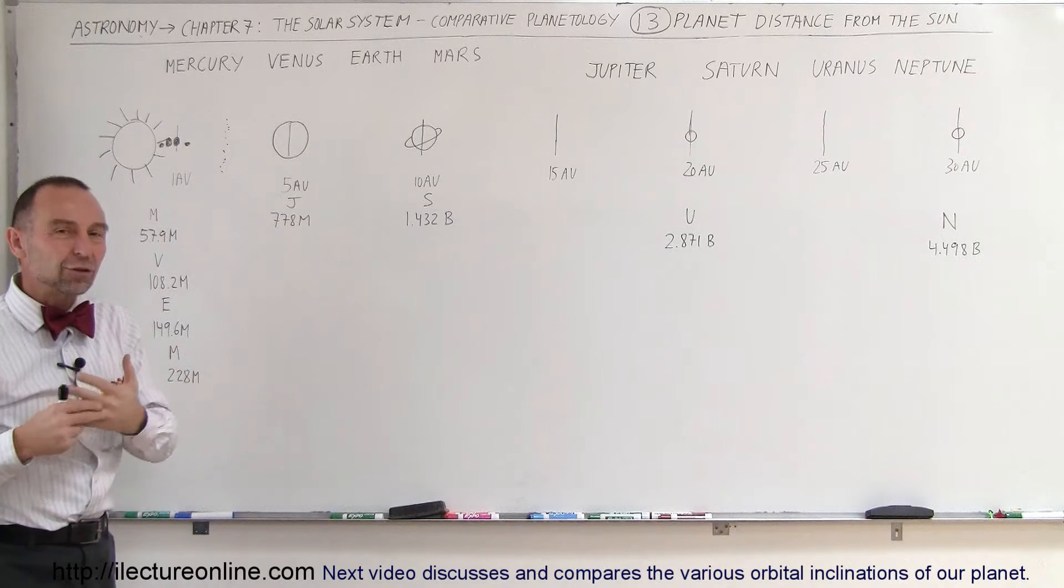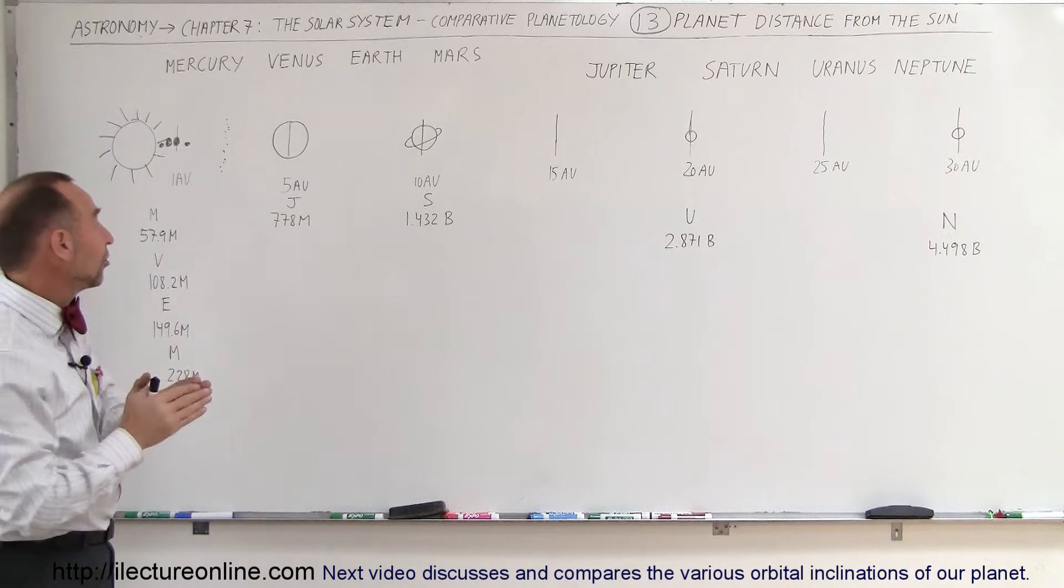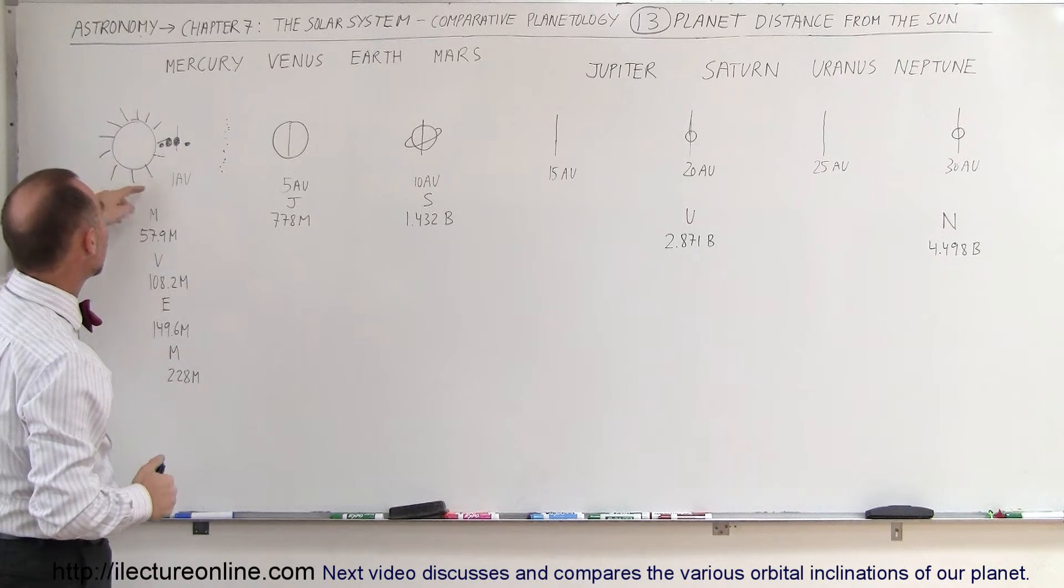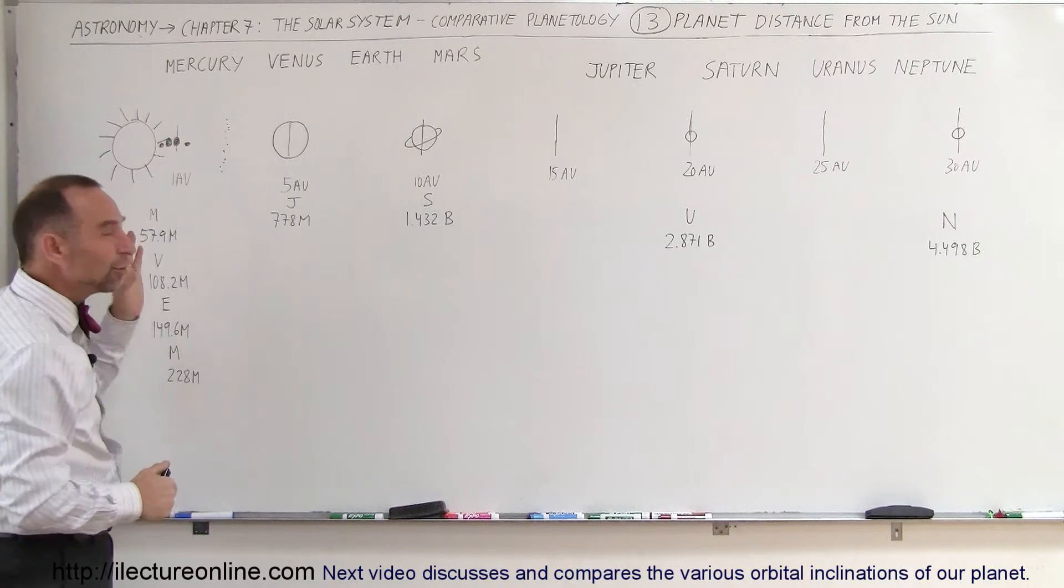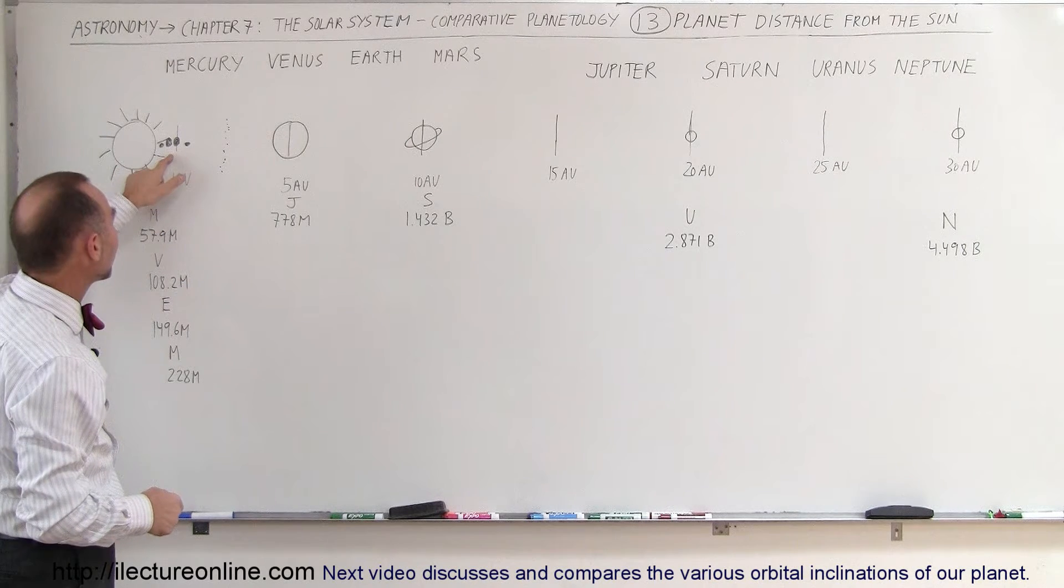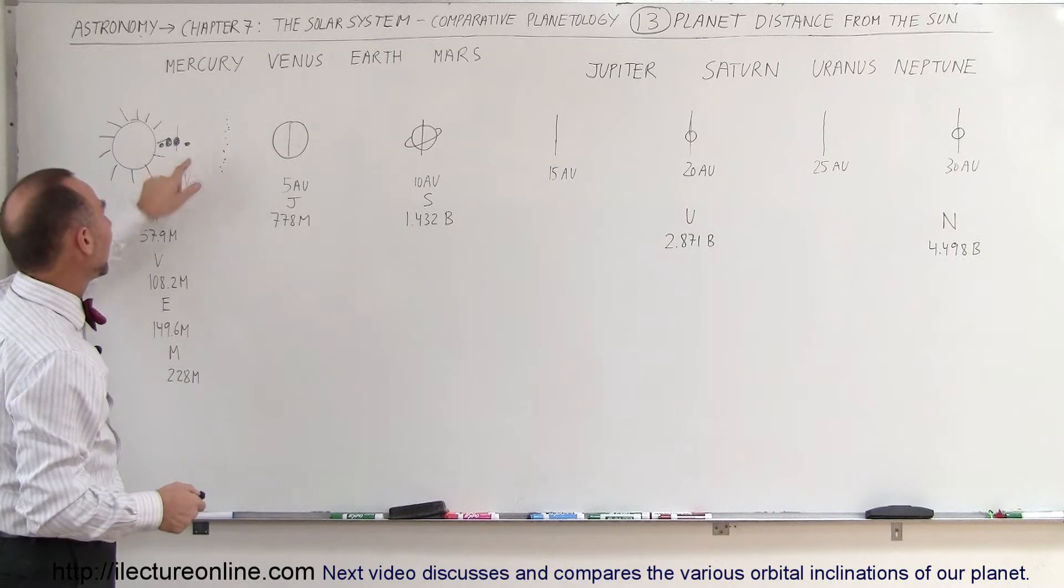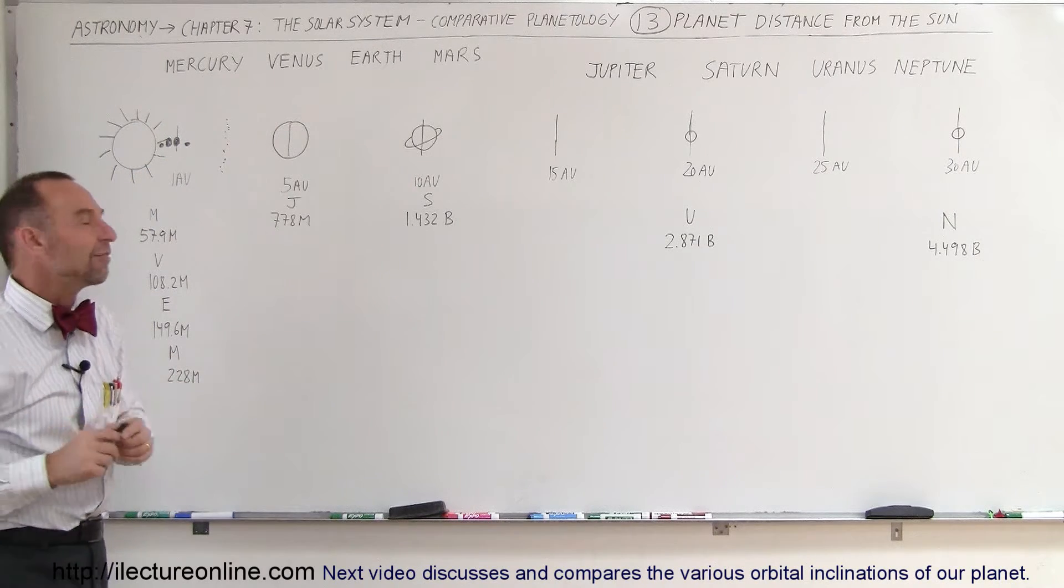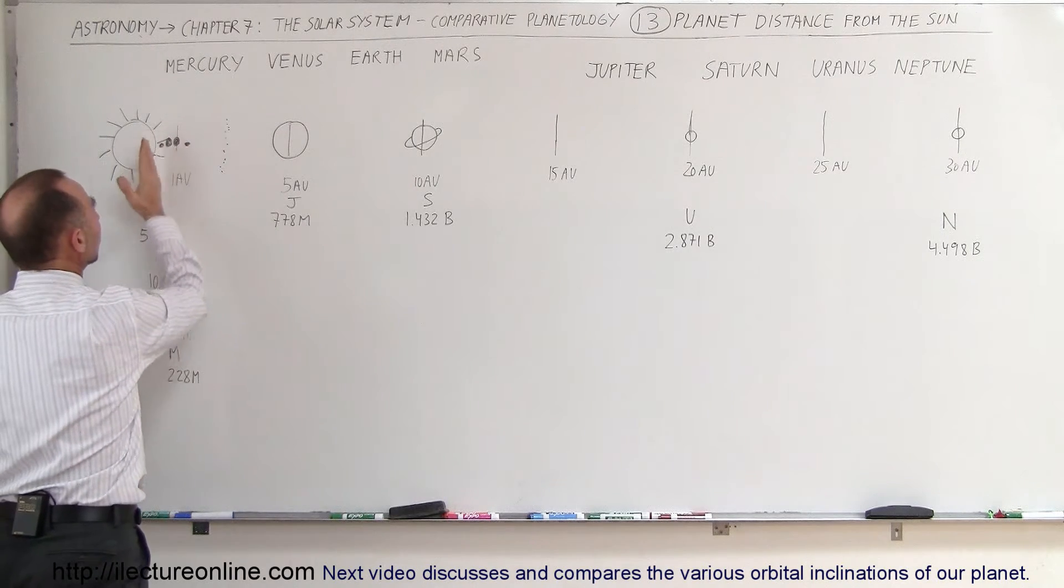If you want to express it in terms of astronomical units, which is the distance between the Earth and the Sun, you can see that Mercury is about 0.4 astronomical units, Venus is about 0.7, Earth of course would be 1, and Mars would be about 1.5 astronomical units, very close to the Sun.